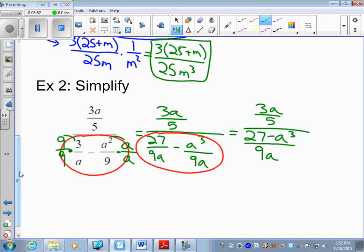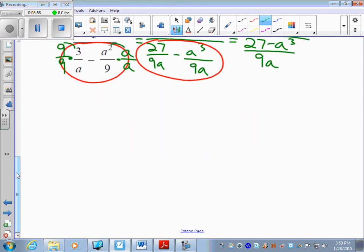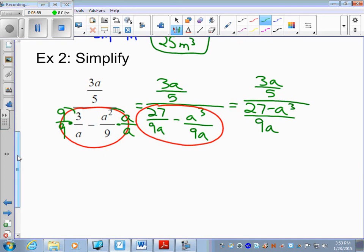Now we change that to keep change flip. So we keep the 3a over 5. This is the K, C, F. Keep it: 3a over 5. This is also a division here. So we change it to a multiplication and flip the second fraction.